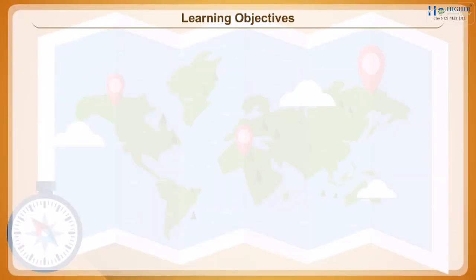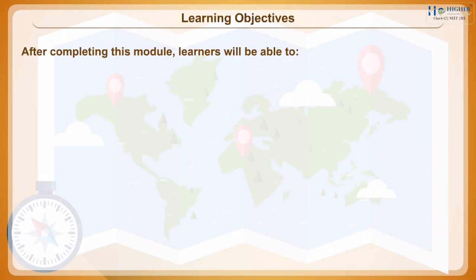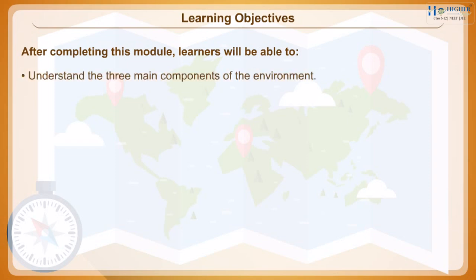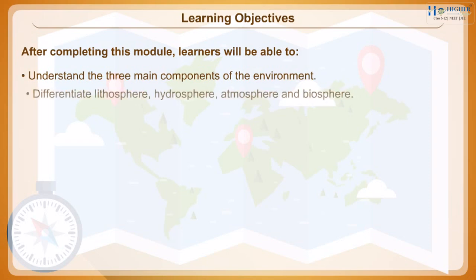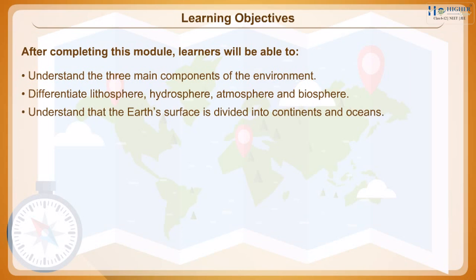Learning Objectives. After completing this module, learners will be able to: understand the three main components of the environment; differentiate lithosphere, hydrosphere, atmosphere and biosphere; and understand that the Earth's surface is divided into continents and oceans.